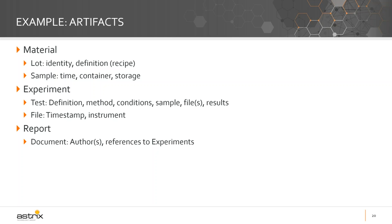On the experiment side of things, we have tests. Those tests have definitions — they have methods, conditions, and the sample that was actually tested. There's a bunch of files from the analytical instrumentation, and then there are results or conclusions. When the testing team runs experiments, they produce an artifact which is a test with these types of properties. We have files as well — those files themselves are artifacts, generally associated with an instrument and a timestamp.